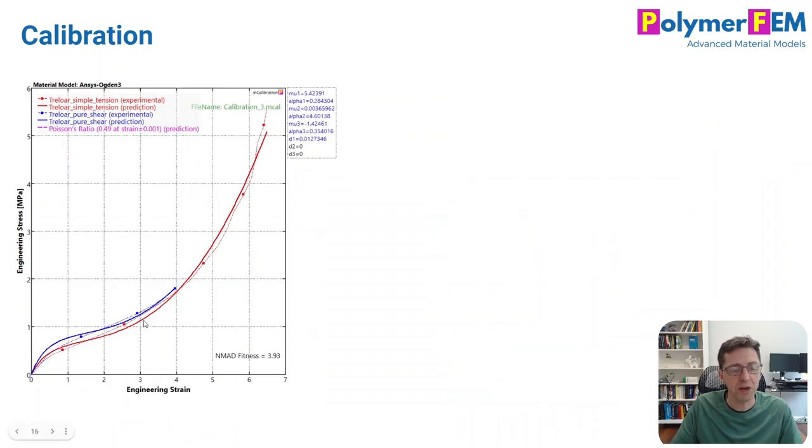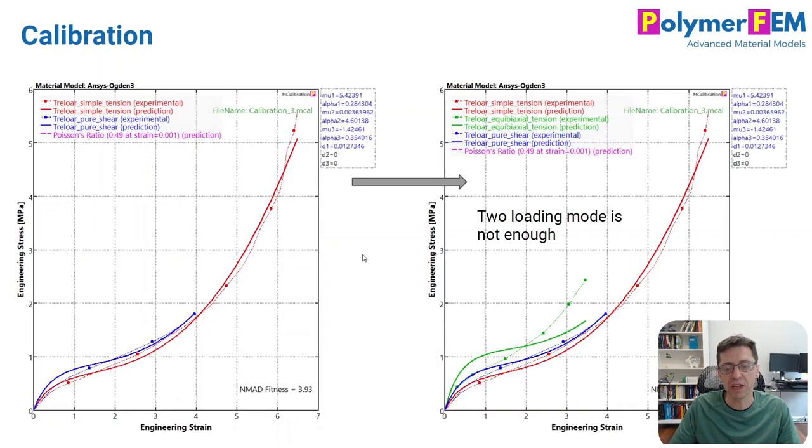How about this? How about if I use both uniaxial tension and the pure shear data? That's the red and the blue here. I can calibrate them all and it works very well under those conditions. But what if I then take that calibrated material and compare it to the biaxial predictions that I have, the data I already have from Treloar, and see that it doesn't still work.